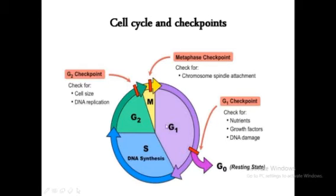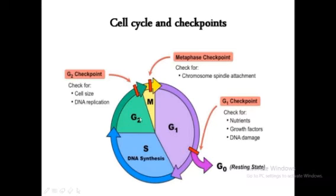Cell cycle has four phases: G1 phase, S phase, G2 phase, and M phase. G1 phase is the first phase in which cell organelles like mitochondria replicate. In the S phase, also known as synthesis phase, the genetic material or DNA of cells replicates. In the G2 phase, the cell grows and prepares itself for the mitotic phase, that is M phase. The M phase, also known as mitotic phase, is the last phase where cells finally divide into two equal cells.